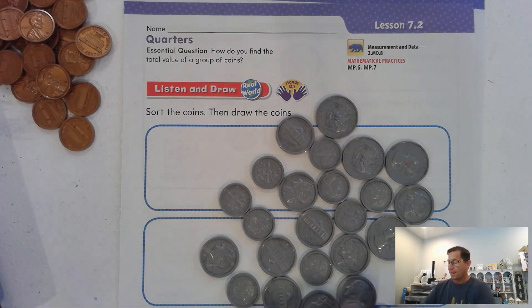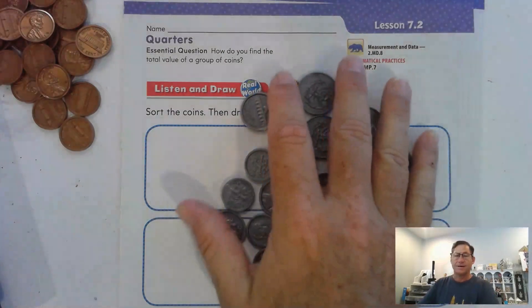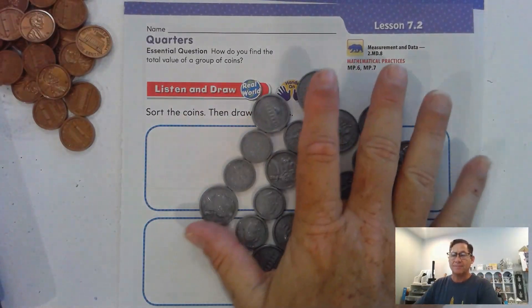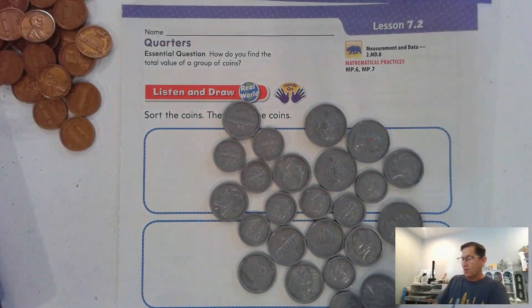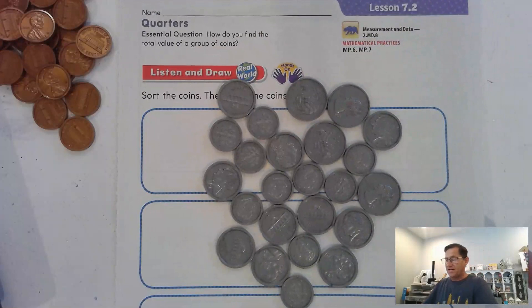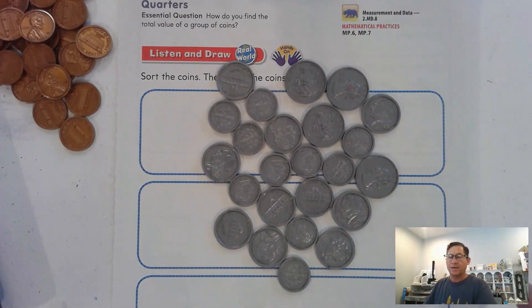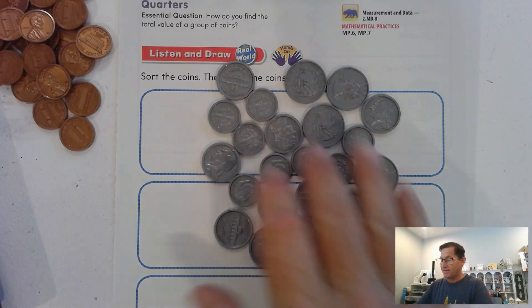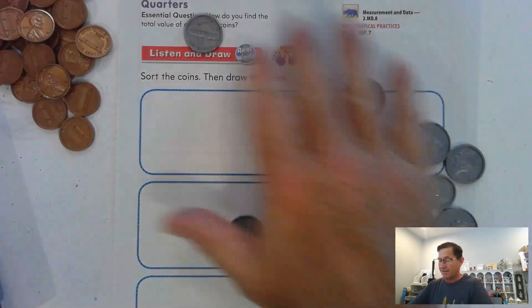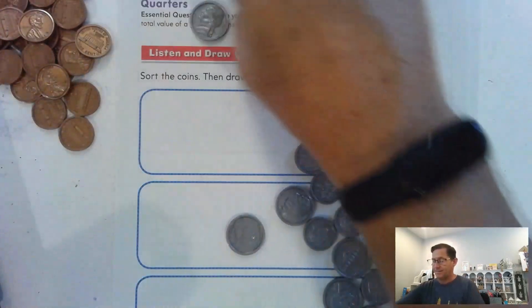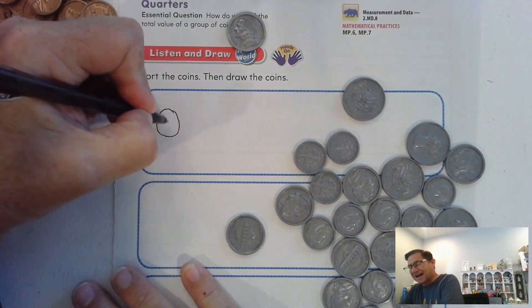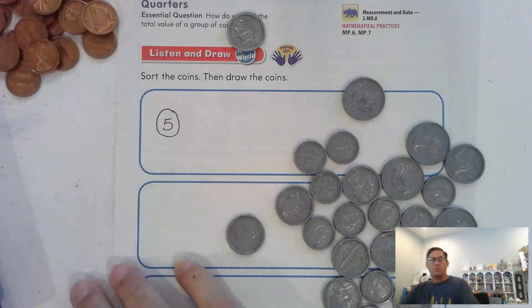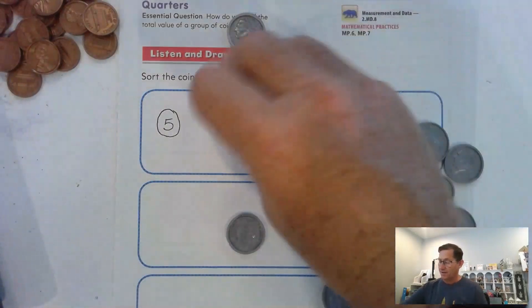I want you to take nickels, dimes, and quarters from your bag and just set them out separately, or you can follow along. In each box we're going to put circles to represent the coins that are the same. For instance, we have a nickel here. A nickel is larger than a dime but smaller than a quarter as far as size. Its value is five cents.